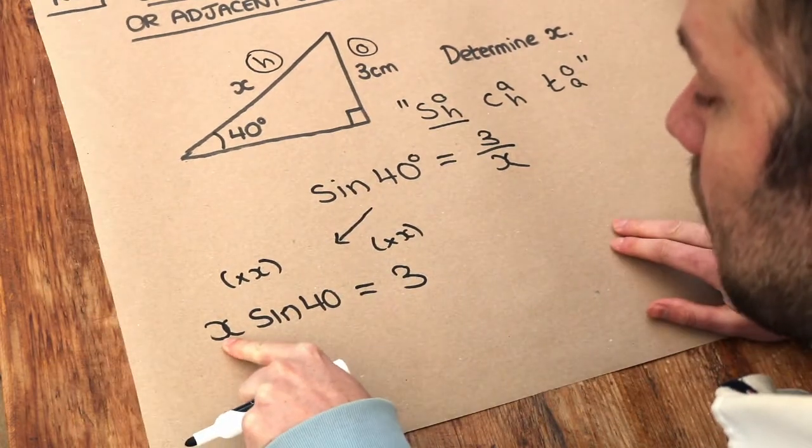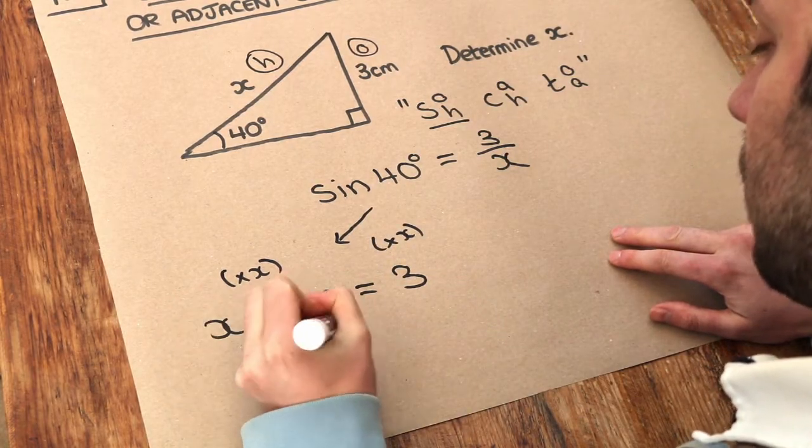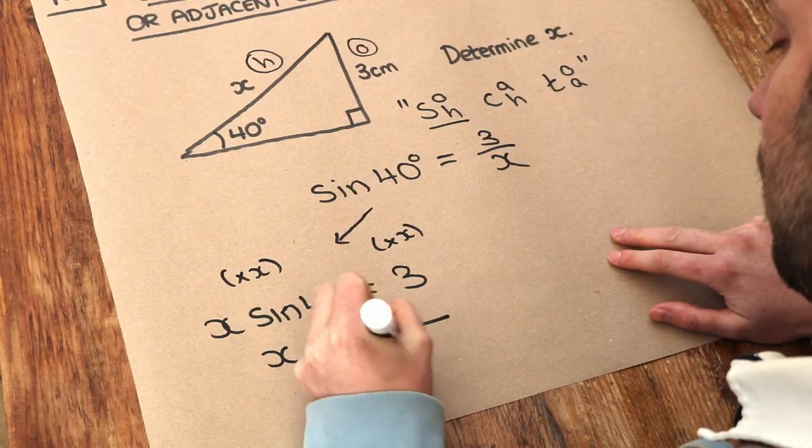Now to get x on its own, it's being multiplied by sine of 40, so we just divide both sides by sine of 40, and then we get 3 over sine of 40.